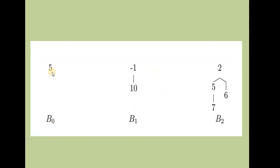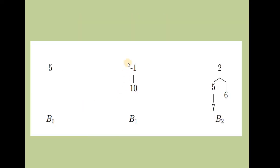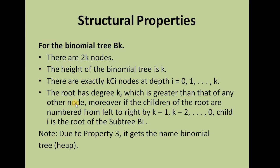For B0, the height is zero; for B1, the height is one. There are exactly K-choose-I nodes at depth I, for I = 0, 1, and so on. The root has degree K, which is greater than that of any other node. For B1 the root has degree 1; for B2 the root has degree 2, while all other elements have lesser degree.